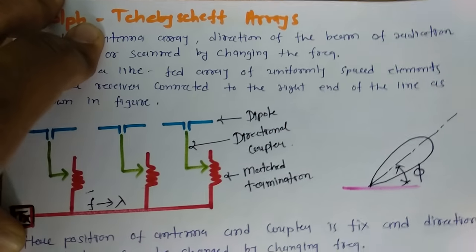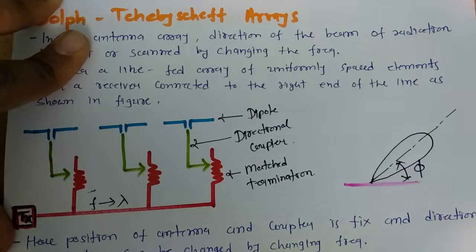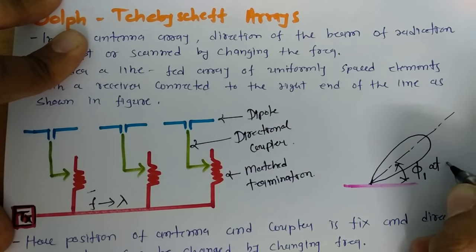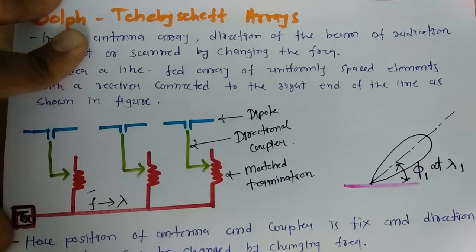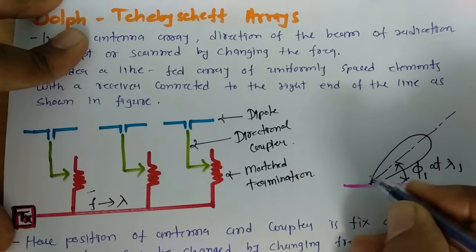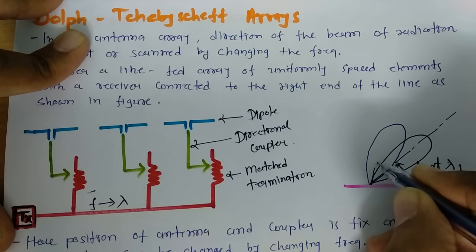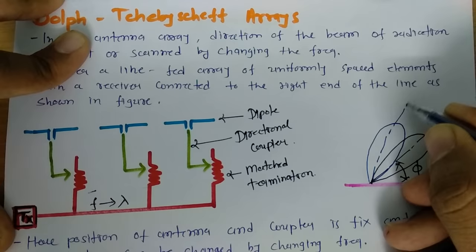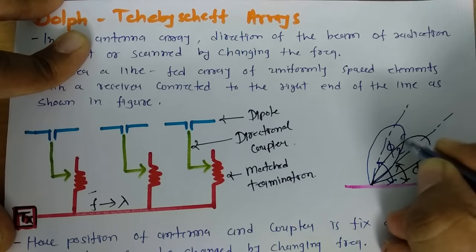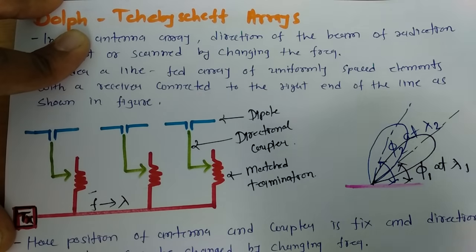Then, how could I change the direction of radiation? This is what the case which is happening. Let us say phi 1 angle at wavelength lambda 1. Then, at other wavelength, we can steer this beam. For example, right now, beam is in this direction. And this angle is phi 2. That is happening at wavelength lambda 2.